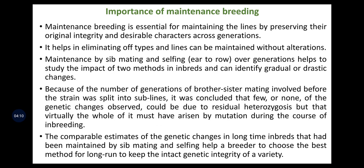Coming to the importance of maintenance breeding, it is essential for keeping the line integrity, eliminating off-types, and keeping mutations to a certain level. Maintenance by sib mating and selfing is most relevant for cross-pollinated crops. Over generations, this approach helps study the impact of different methods of inbred maintenance — selfing and sib mating — and can identify gradual or drastic changes.